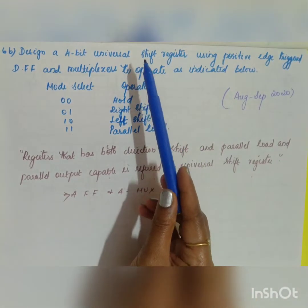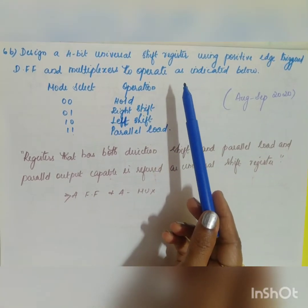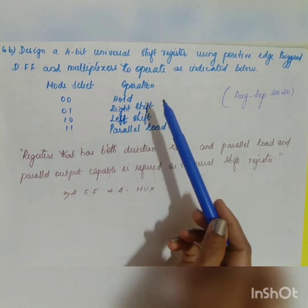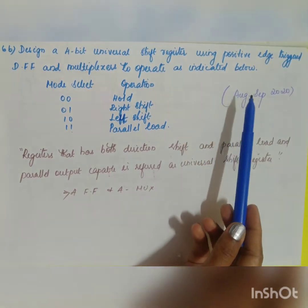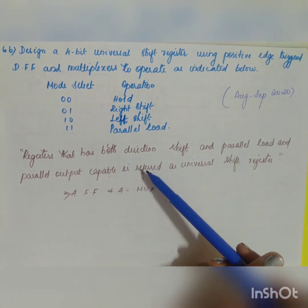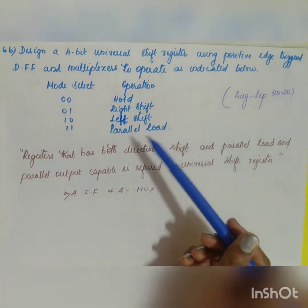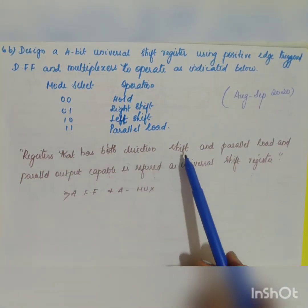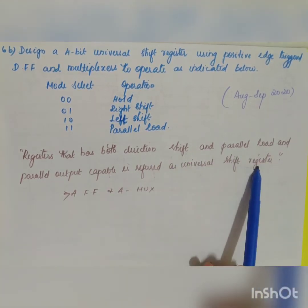Before designing, we need to know what is meant by a universal shift register. A shift register that can do both shift operations — left shift and right shift — which is also called bidirectional, and which also has parallel load and parallel output capability, is referred to as a universal shift register.